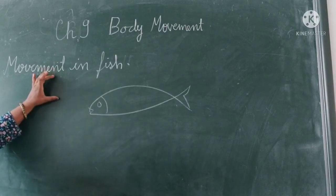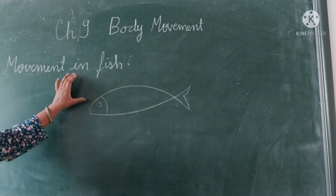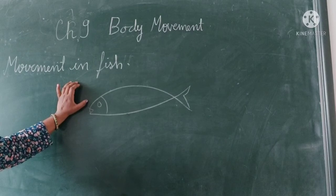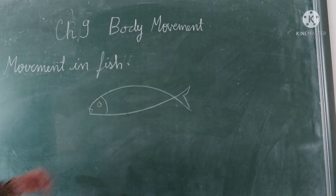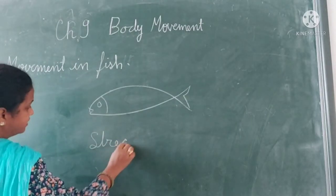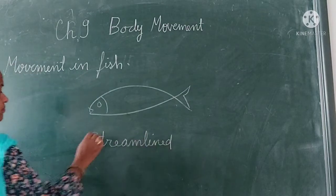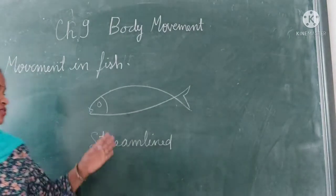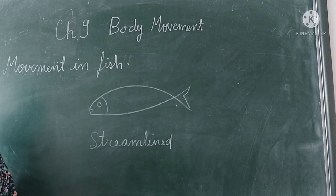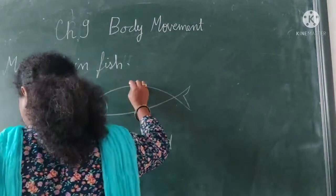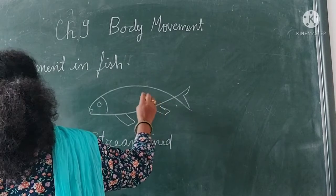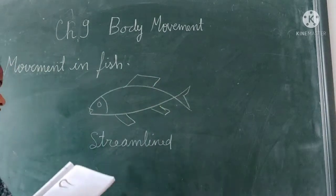The body of a fish is usually broader in the middle and narrower at the front and rear. This type of body structure is called a streamlined shape, and it helps the fish to move easily through water. Fish also have fins which help them to move easily in the water.